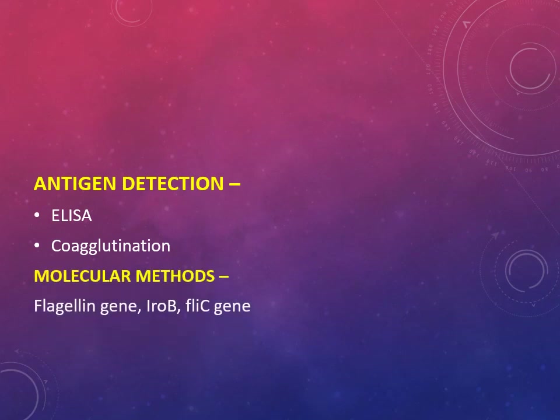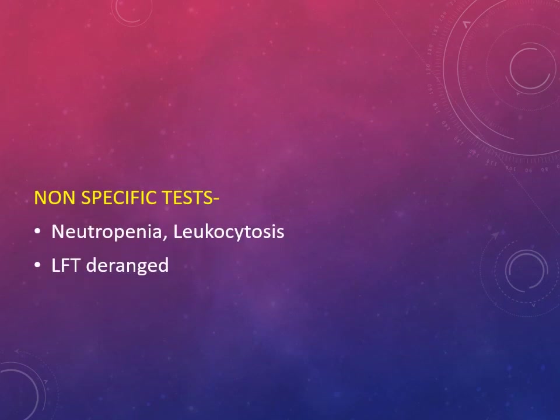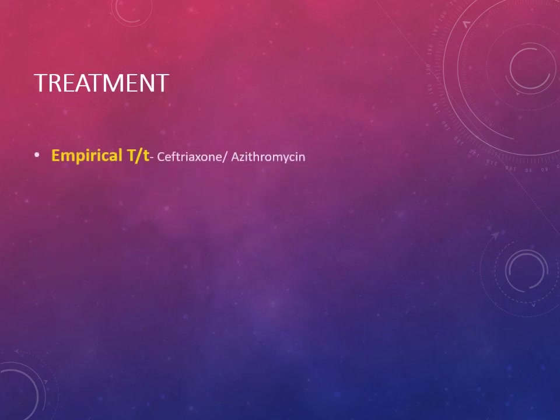Molecular methods include targeting the flagellin gene, iroB gene, and fliXi gene. Certain non-specific tests are also used: neutropenia - a fall in neutrophil count, leukocytosis - increased leukocyte count, and deranged liver function tests showing altered levels of liver enzymes.